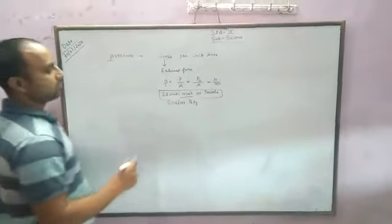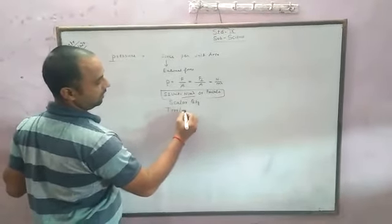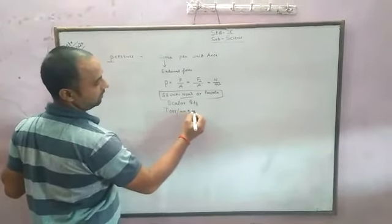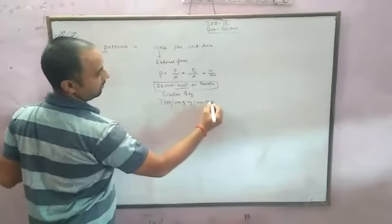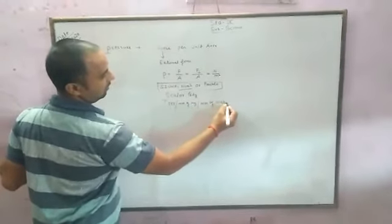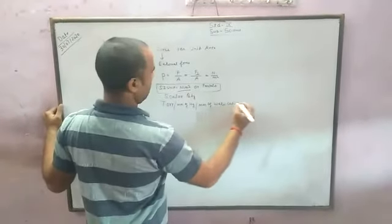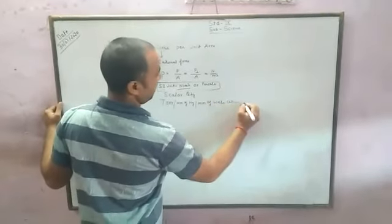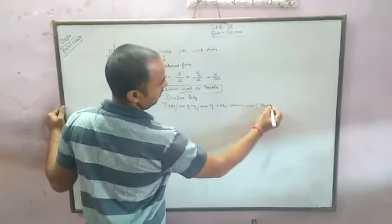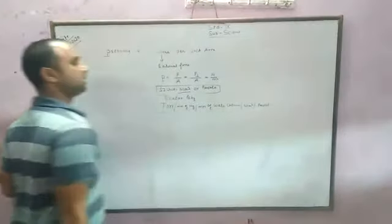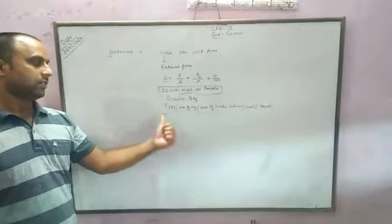There are various types of units in pressure. The first unit is Torr, millimeters of mercury, millimeters of water column, and Newton per meter square or Pascal. These are the basic terminologies with basic units which we are using in terms of pressure.